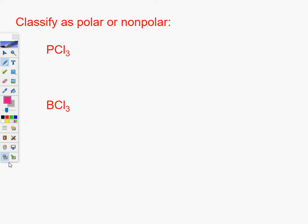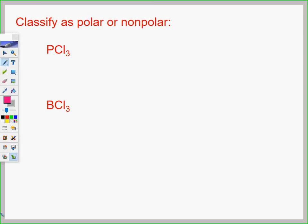PCl3 — phosphorus trichloride. Can anybody tell me what PCl3 is? You guys already know that — phosphorus trichloride. Let me ask you a quick question: could that violate the octet rule? Could phosphorus trichloride violate the octet rule?